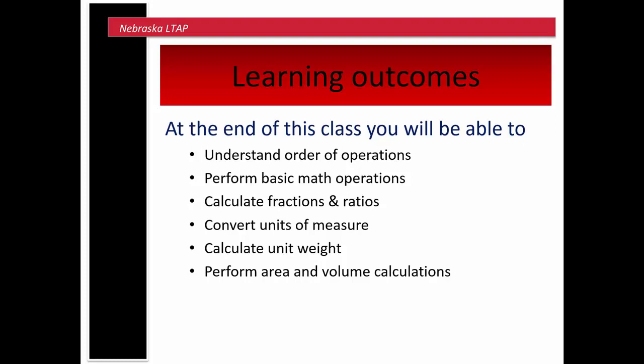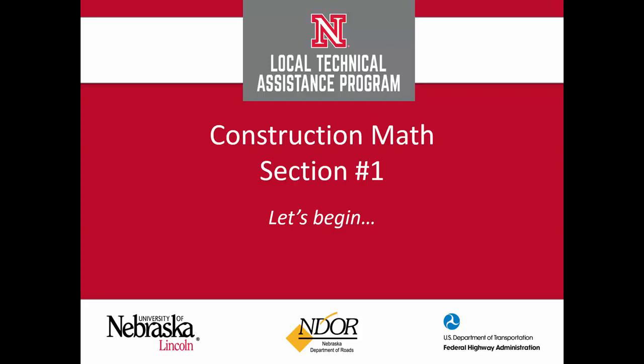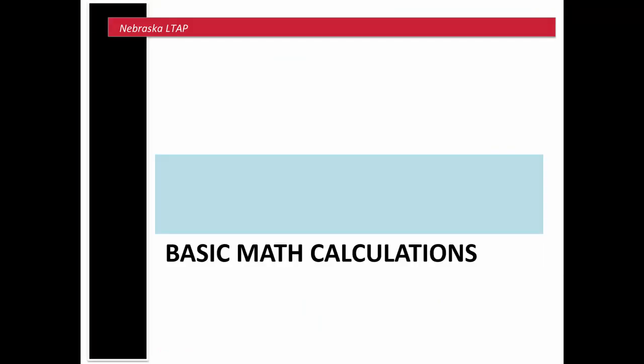Within this course, what we hope you'll be able to do by the end is understand the order of operations — when you're given a long string of operations to calculate within one problem, you know the correct order in which to do that. We'll review and perform basic math operations, calculate fractions and ratios, work with conversion and units of measure, calculate unit weight, and perform area and volume calculations. We're going to start with section one: basic math calculations. This course is broken up into four chapters or sections.